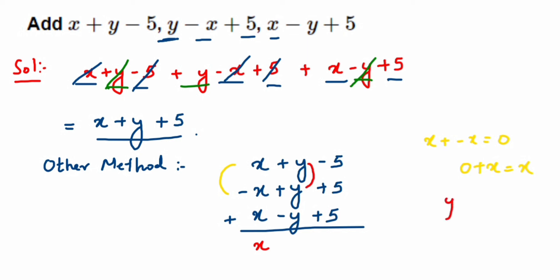For the y terms: y plus y is 2y, and 2y minus y equals y. So the second term is plus y.